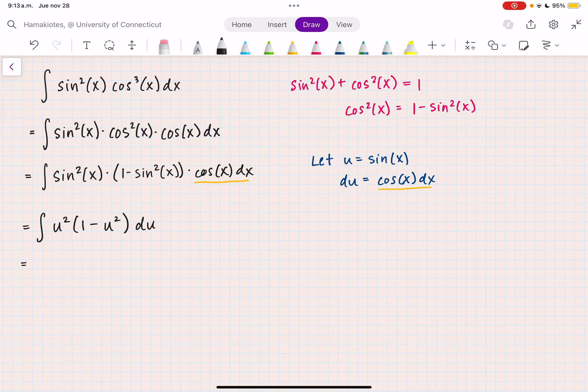I can distribute the u squared, so I have u squared minus u to the fourth du. And I can break up this integral into the integral of u squared du minus the integral of u to the fourth du.